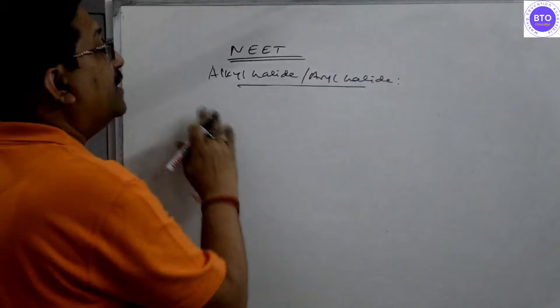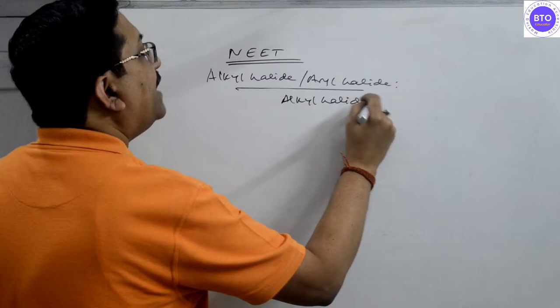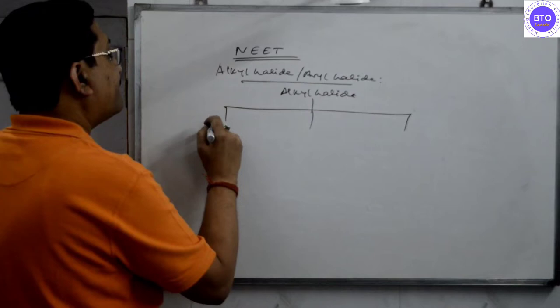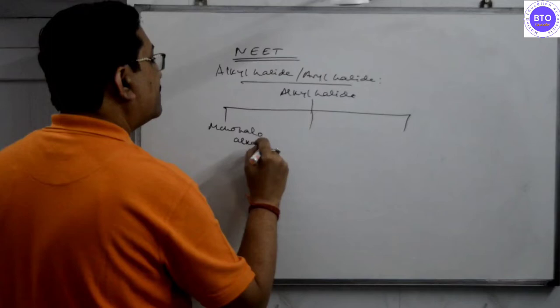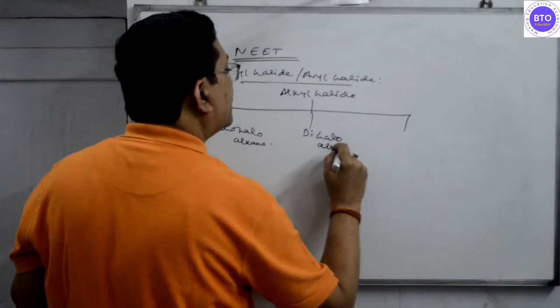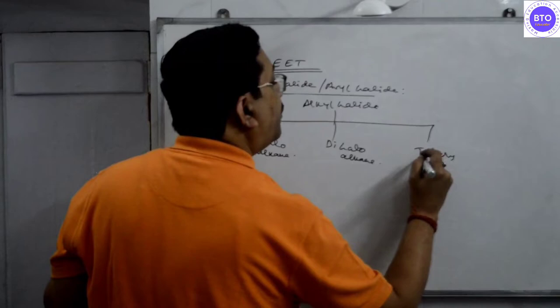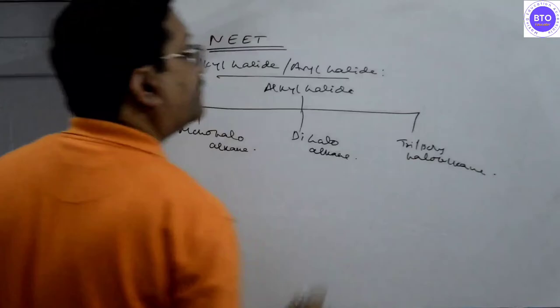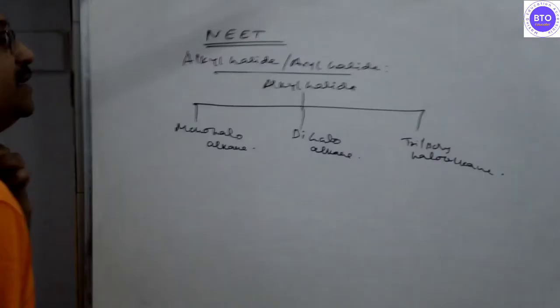Now, alkyl halides can be classified into three main classes: Monohalo-alkane, Di-halo-alkane, and Tri- or Poly-halo-alkane.